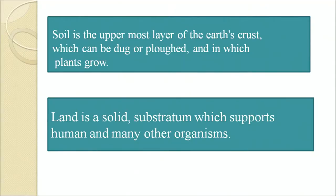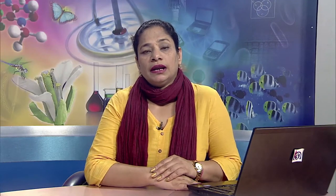Soil is the uppermost part of the earth's crust which can be dug or plowed and in which plants grow. Land is a solid substratum which supports humans and many other organisms. Soil erosion is the loosening and displacement of topsoil particles from the land. It is a natural process that occurs on all lands and may occur at a slow or fast rate.